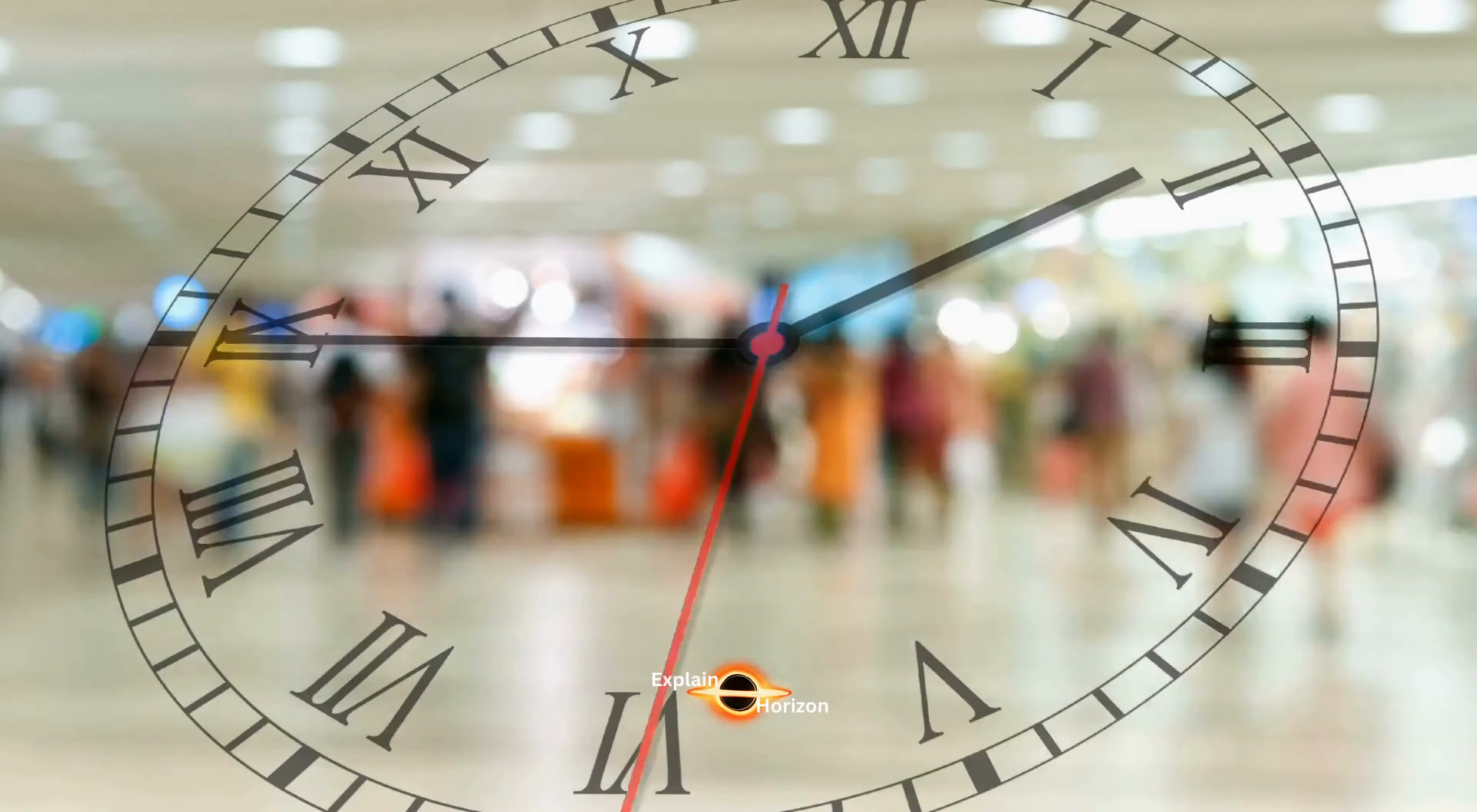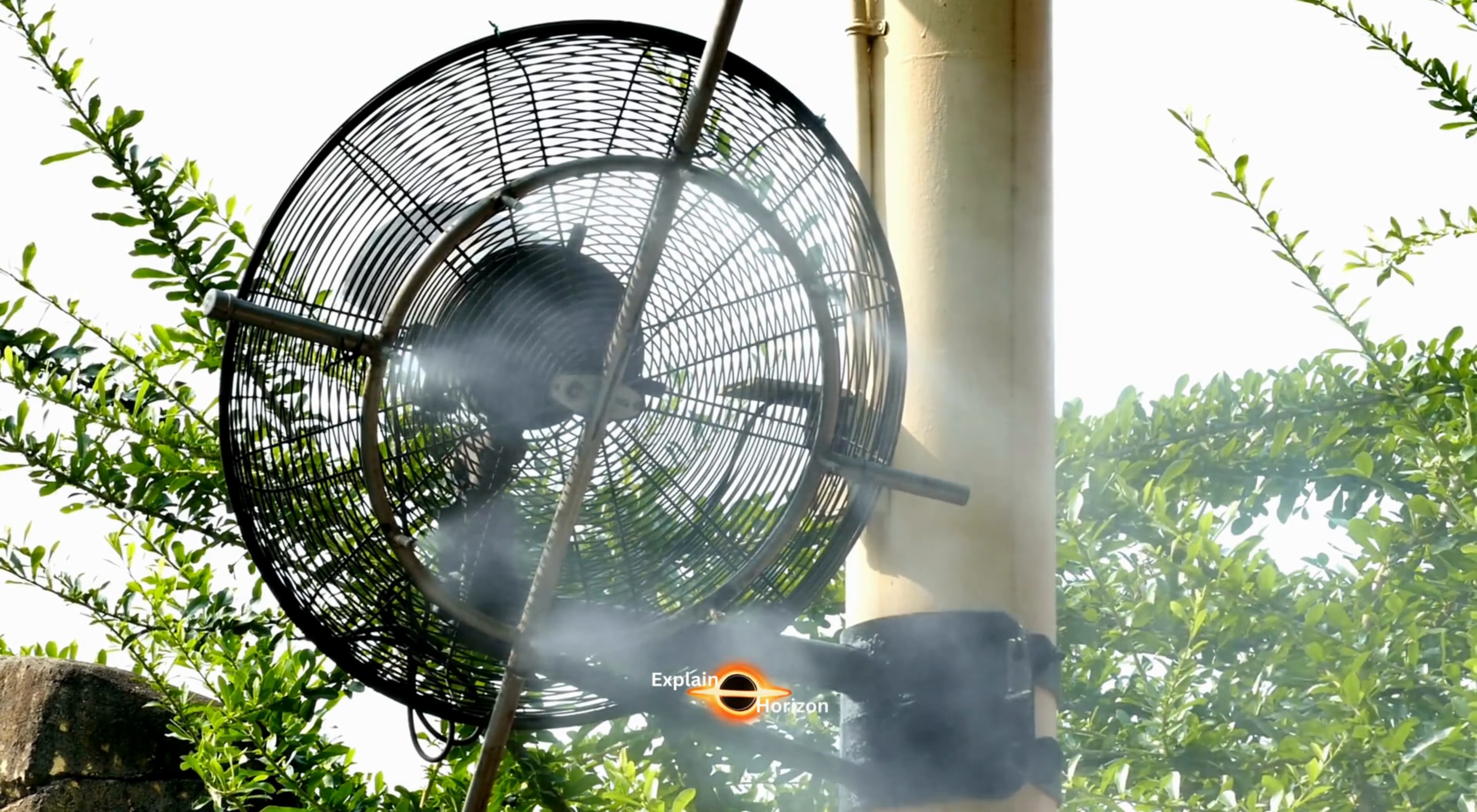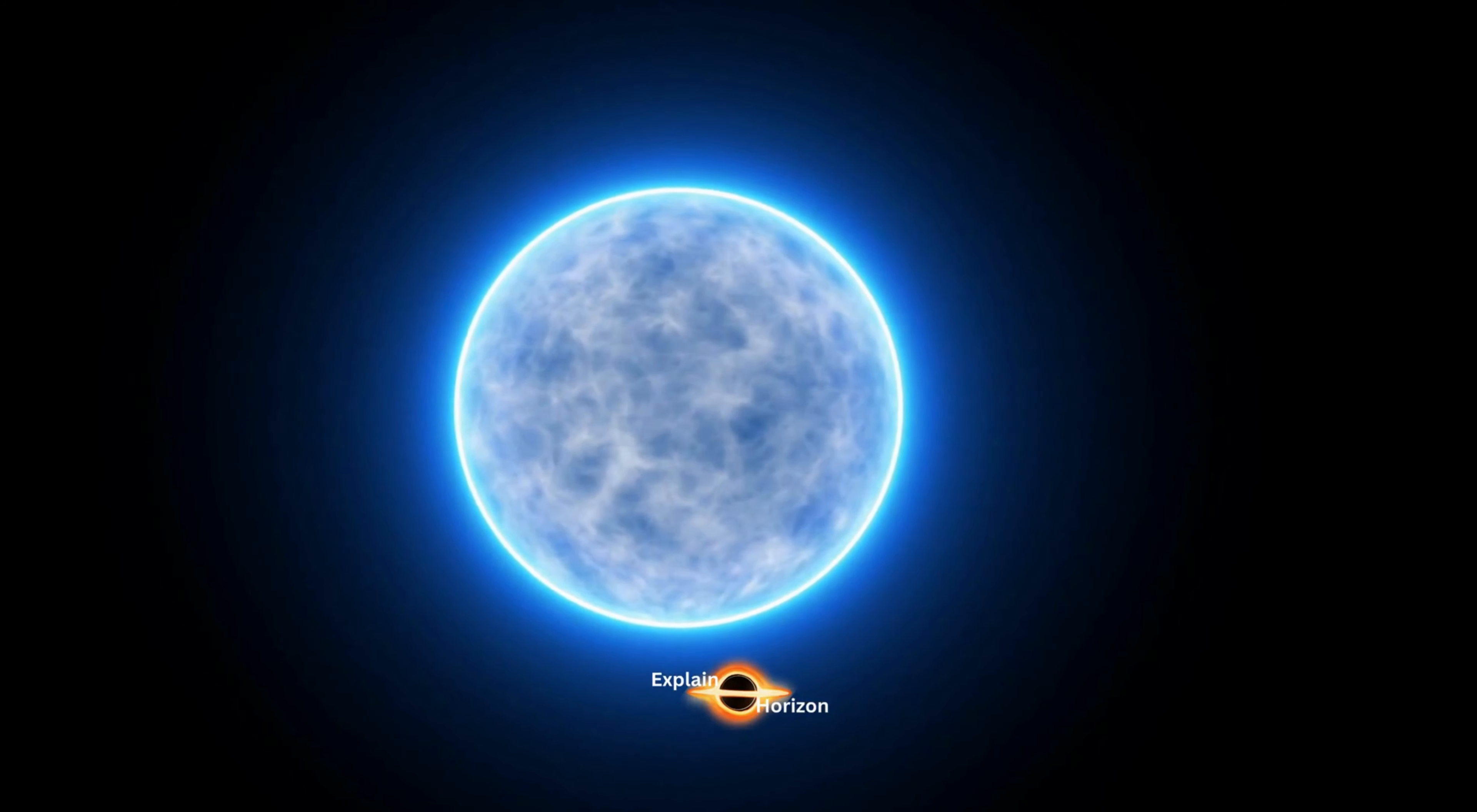Neutron stars have an incredibly long lifespan, with some estimated to live for trillions of years. This is because they are so incredibly dense that they undergo a process called slow cooling, where they gradually release their heat over a very long period of time. In fact, the first neutron stars that formed in the universe over 13 billion years ago are still thought to exist today.